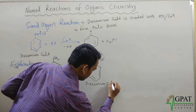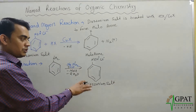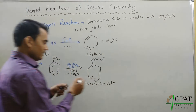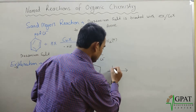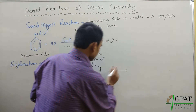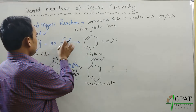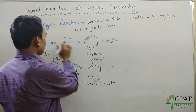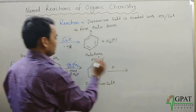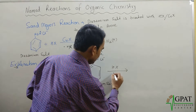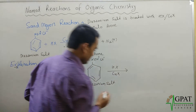This diazonium salt, when reacted with hydrogen halide in the presence of copper halide, gives the Sandmeyer's reaction product.